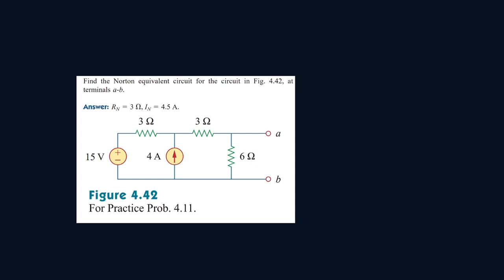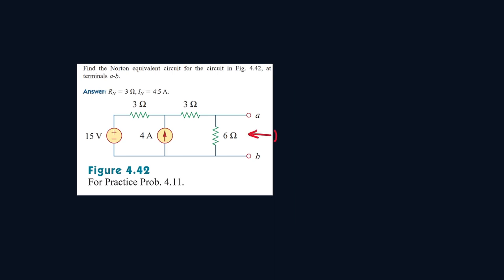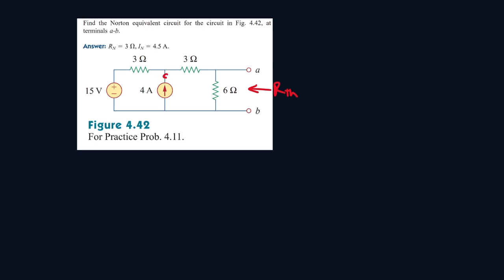Okay, so for the following circuit we have to find R Norton and I Norton. R Norton will be equal to R Thevenin, so let's find that. We can turn off all independent sources, so this one will